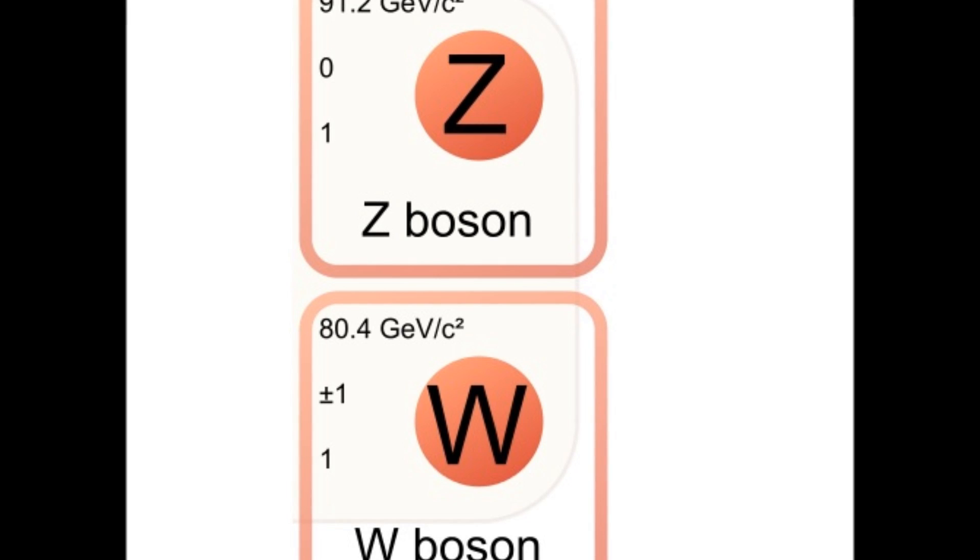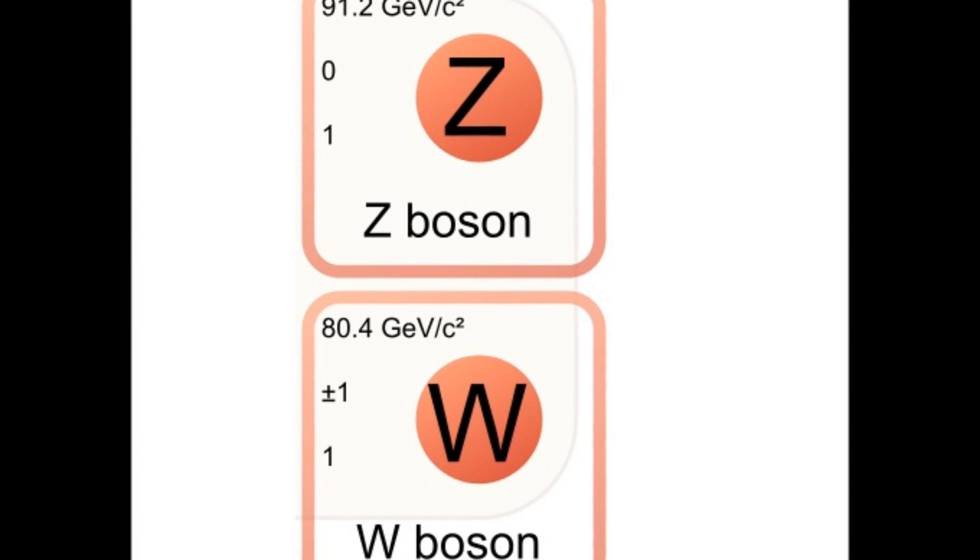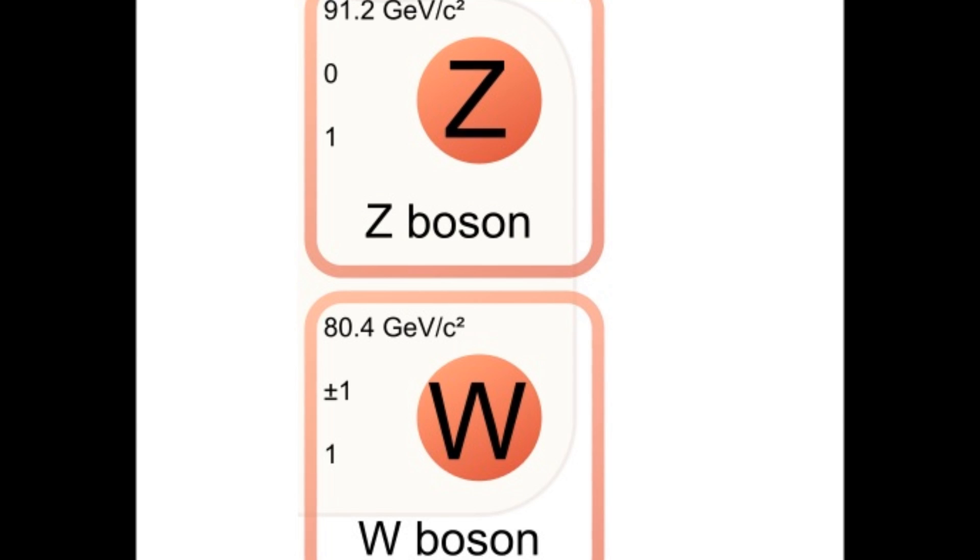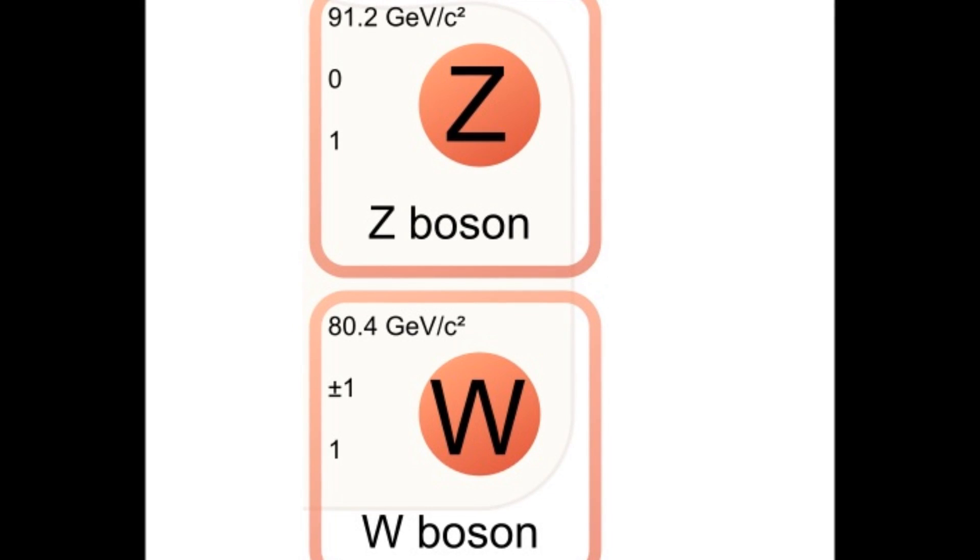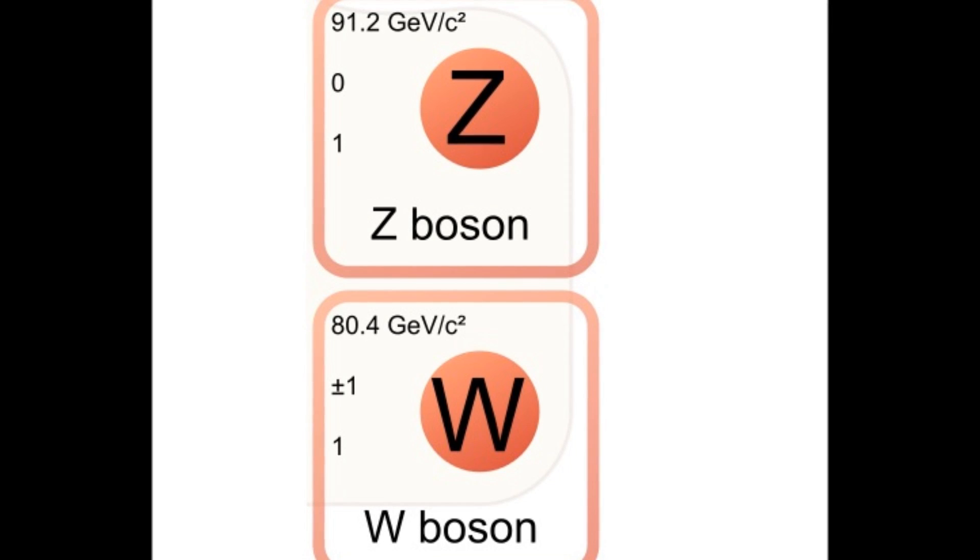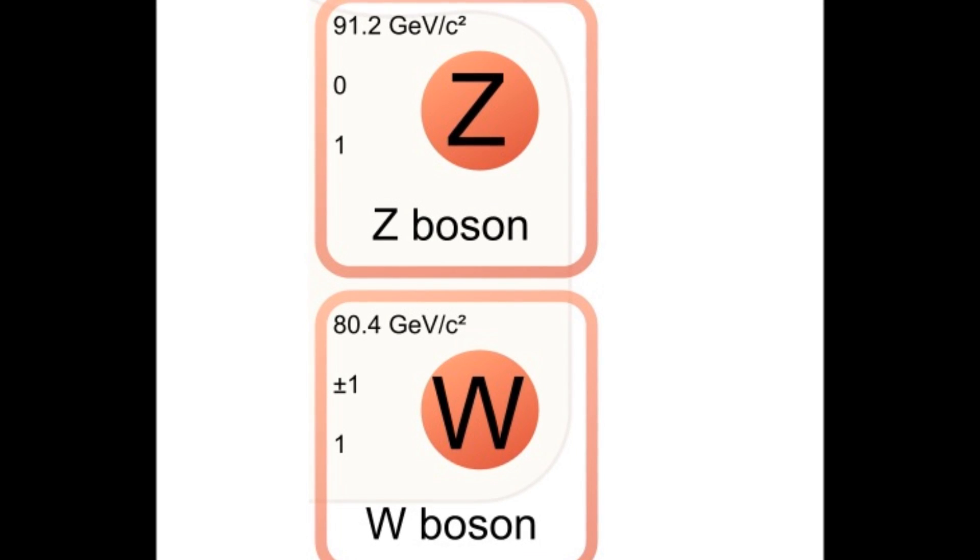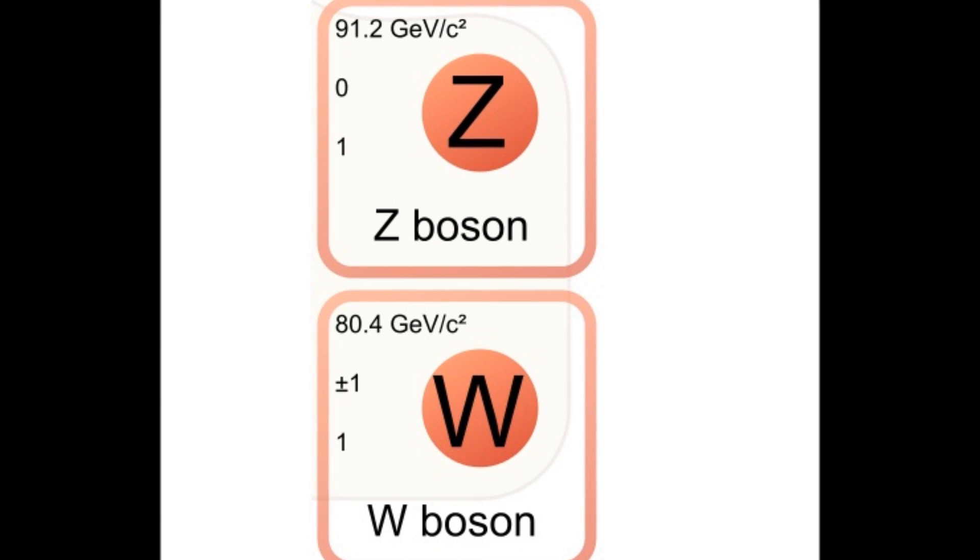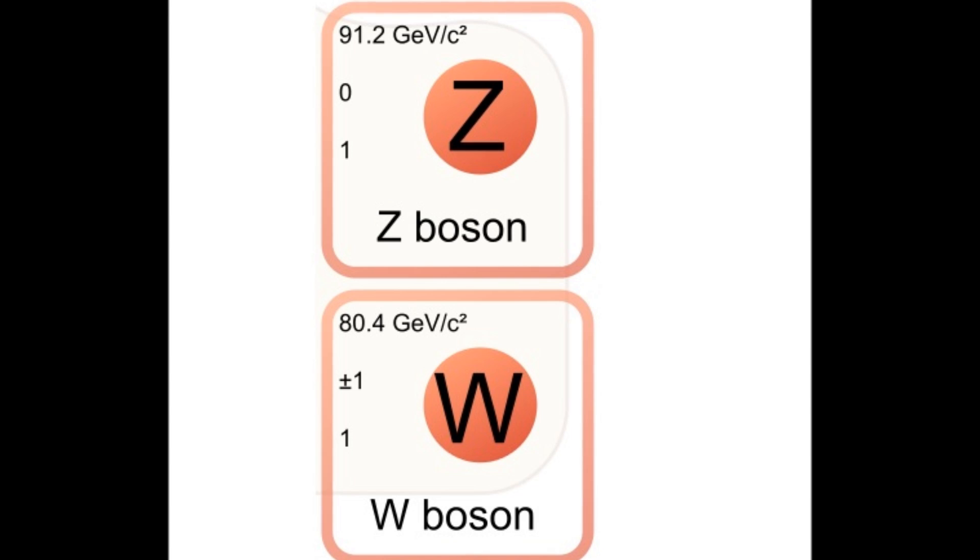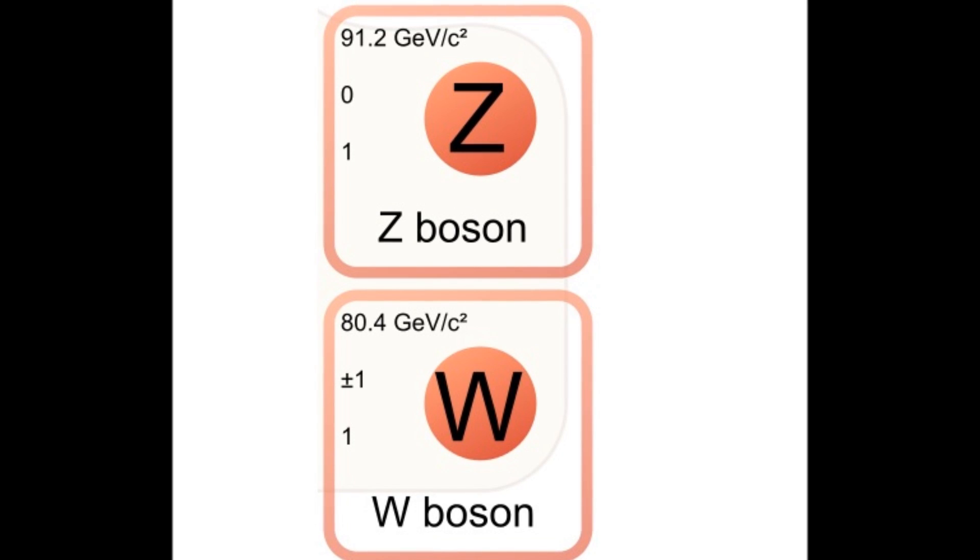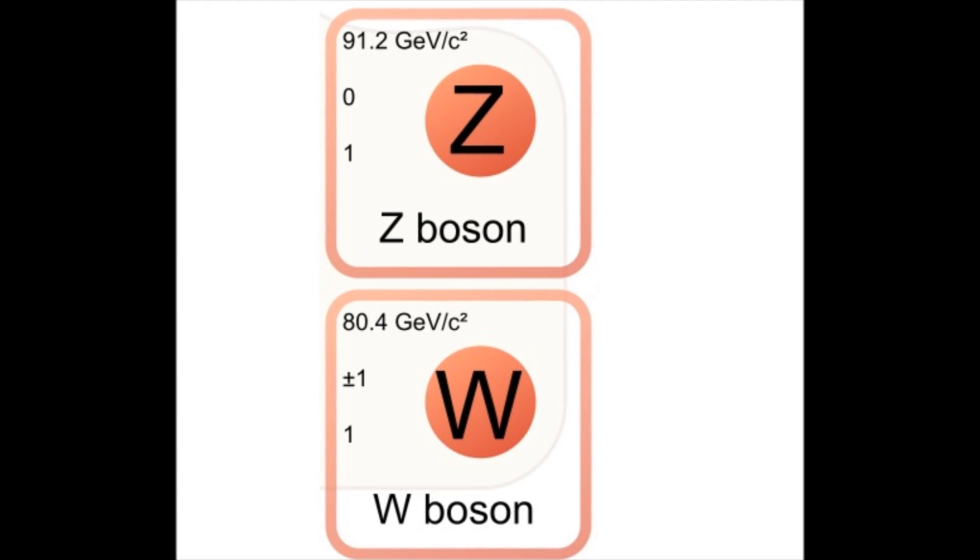For the weak force there are the w plus, w minus and the z boson. These are very heavy particles that have a very small range before decaying into fermionic particles like electrons and up quarks. Because of this the weak force is responsible for a type of radioactive decay called beta decay, a process that helps keep the core of the earth so hot that it can empower tectonic plate movements.